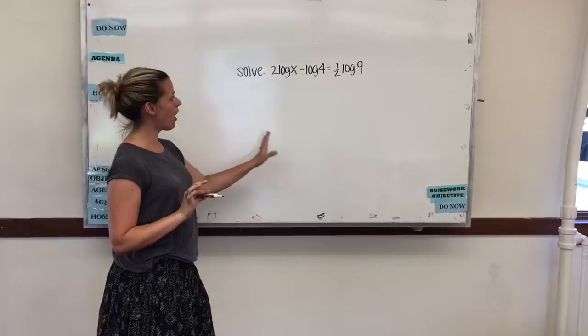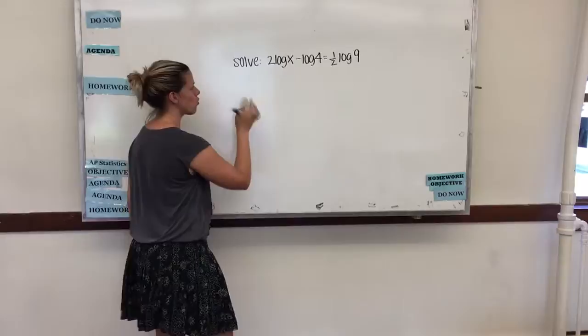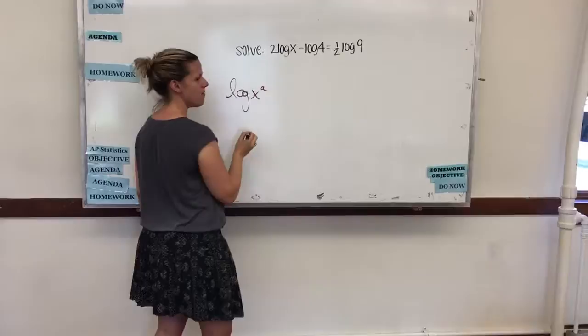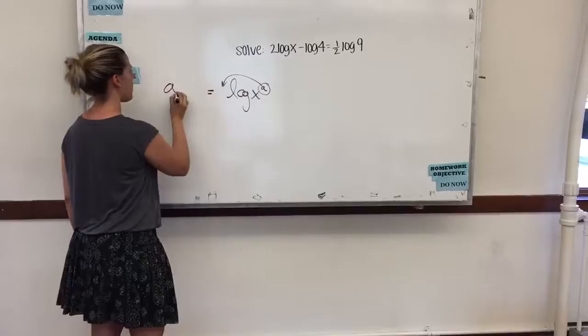There's this power rule for logs. So normally we see it in the other order. So if we see log of like x to the a, this a we can bring down to make it equivalent to a log x. So a power turns into multiplication with logs.